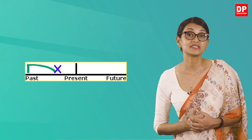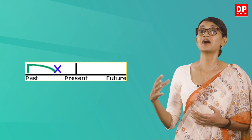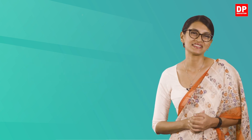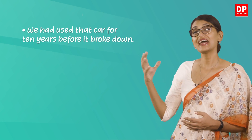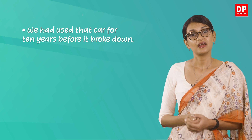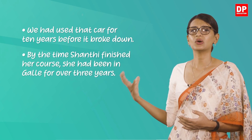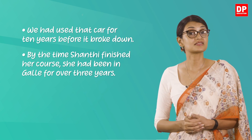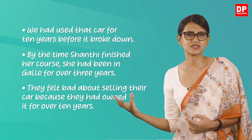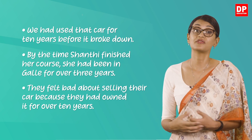The second use is when we show that something started in the past and continued up until another action in the past. Examples: 'We had used that car for 10 years before it broke down.' 'By the time Shanti finished her course, she had been in Galle for over three years.' 'They felt bad about selling their car because they had owned it for over 10 years.'